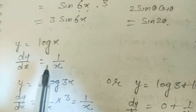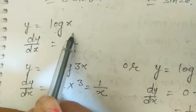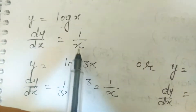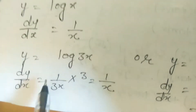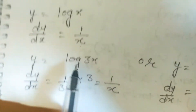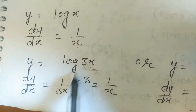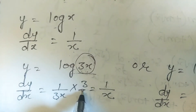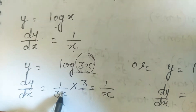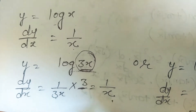The derivative of log x is 1/x. For log(3x), applying chain rule: 1/(3x) · 3 = 1/x. Same answer.